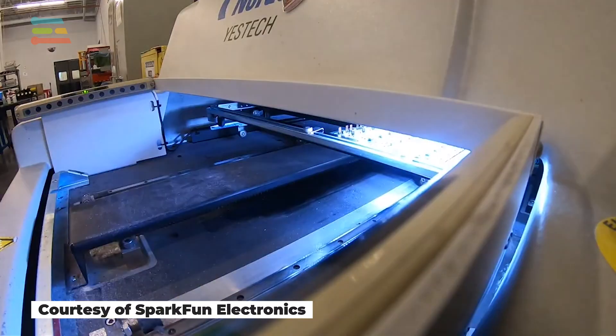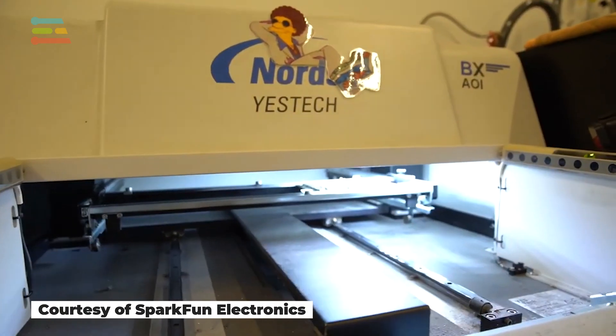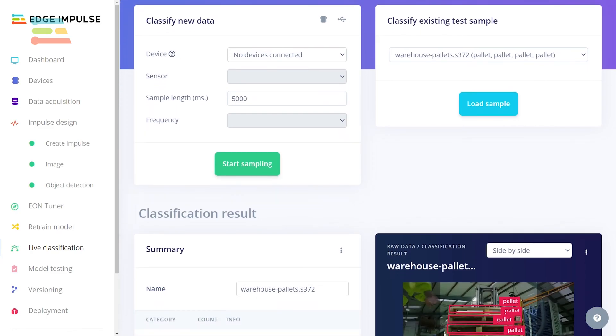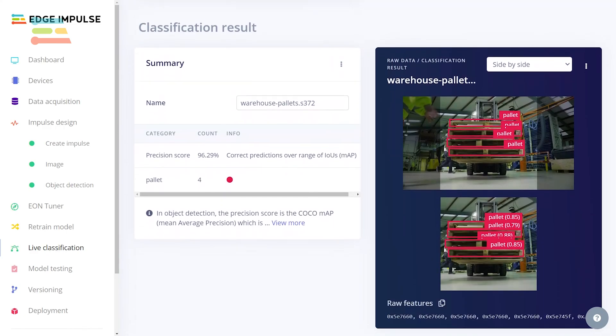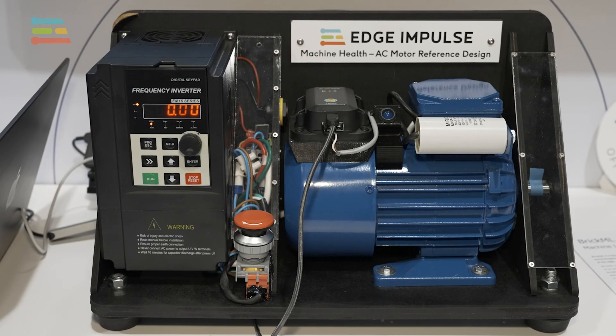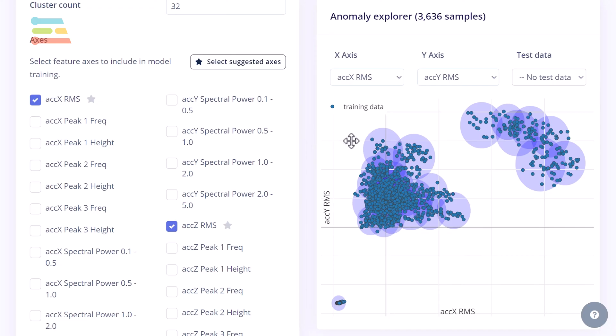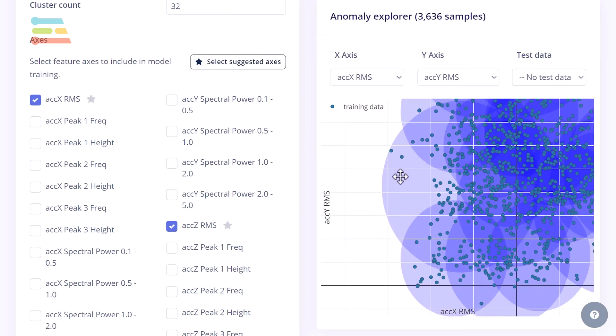For example, automated optical inspection systems look for defects in manufacturing processes. Smart cameras can be used to identify issues with packaging or pallet loading. Even without cameras, sensor data like electrical current, vibration, and sound is useful for monitoring machinery and moving parts for potential problems. Such data can be mixed together and analyzed for anomalies.